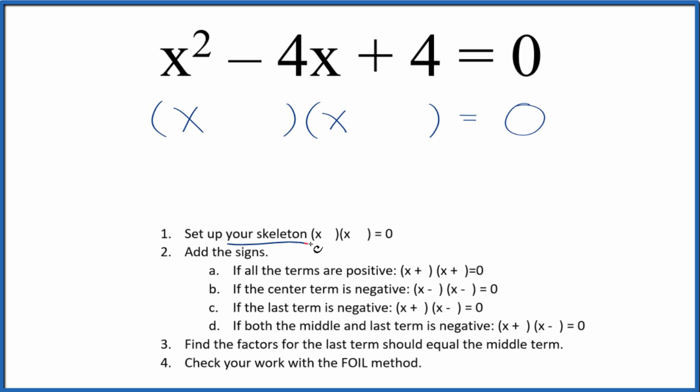First thing, let's set up a skeleton equation. I've already done that. Next, we're going to add the signs to the skeleton equation. So I have this negative here. The center term is negative, so we're just going to put a negative here and here. So we have our skeleton equation and the signs.